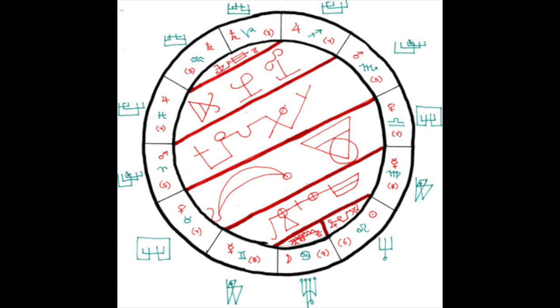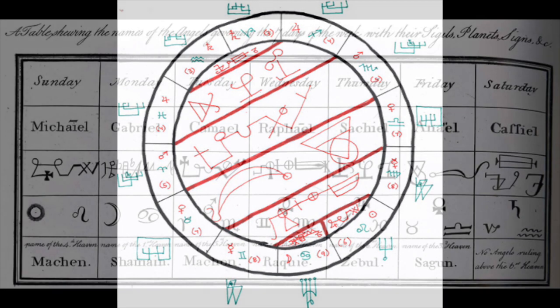Now, this diagram I originally drew as a means of depicting the chart given by Francis Barrett, a 16th century magician and astrologer. Here's the original chart.